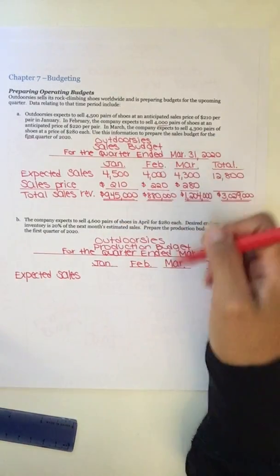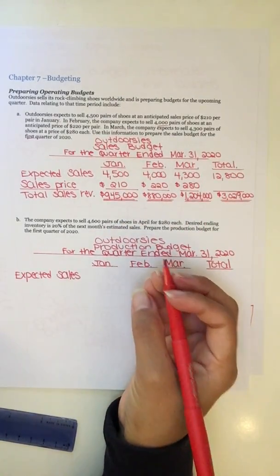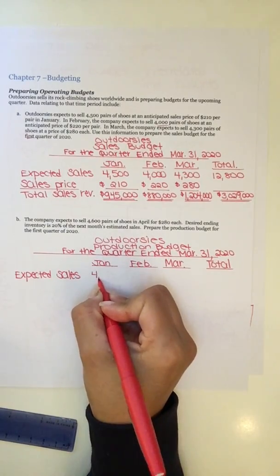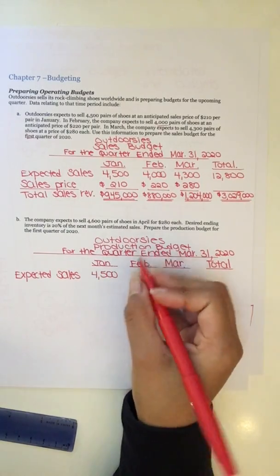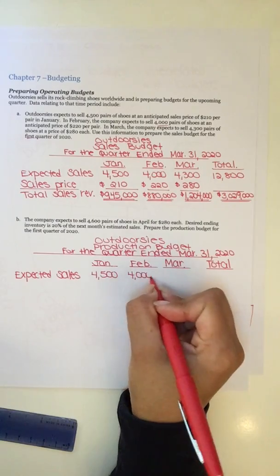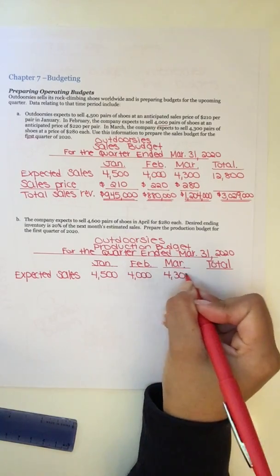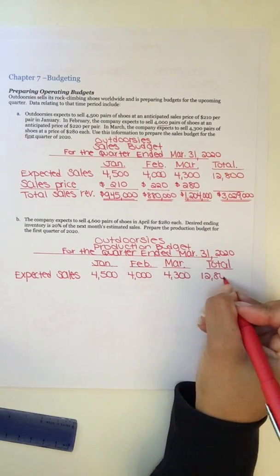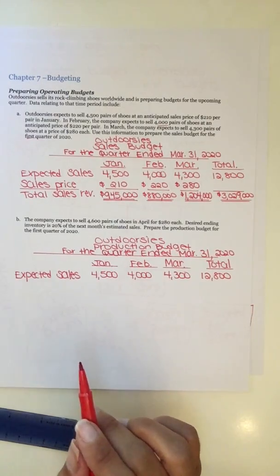Anywho, bring down your expected sales, right? Bring it all down. So 4,500 for January, 4,000 for Feb, 4,300 for March, and a total of 12,800. Still no dollar signs because these are all units.